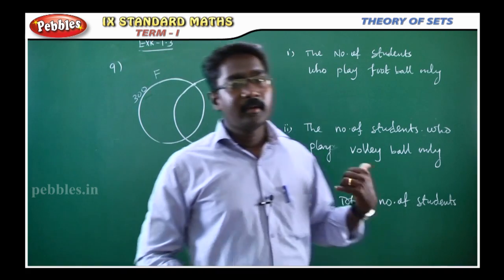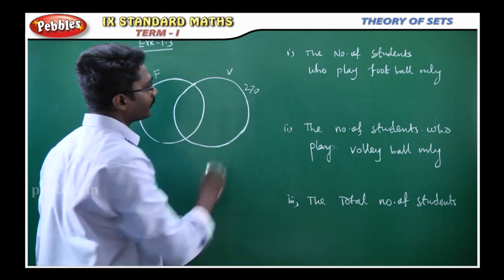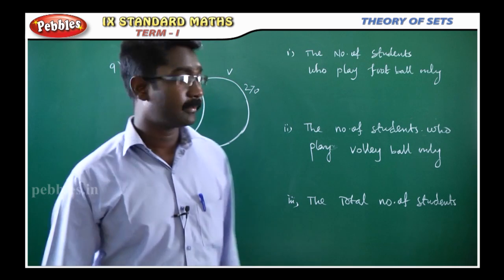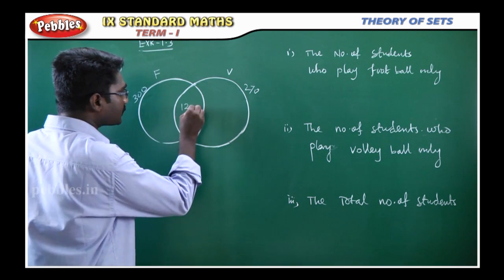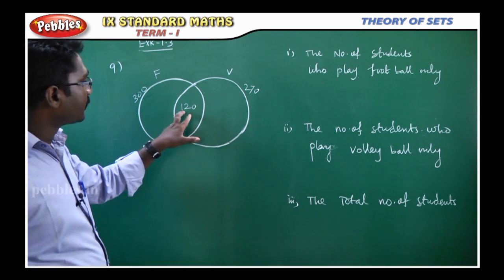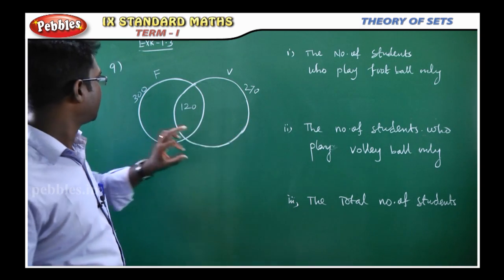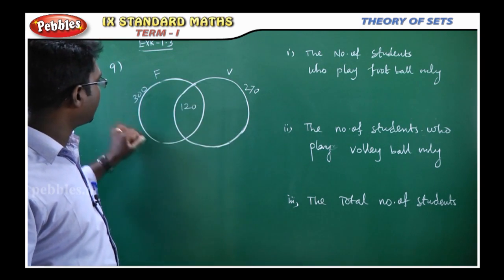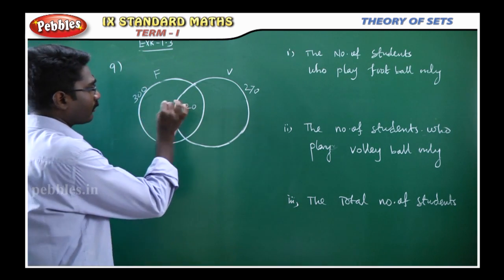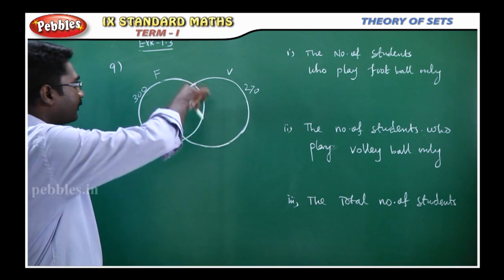If you want to go to the most volleyball available, there are 270 students. This is an important part. 120 students play both the games, so both the games have been in this common part. 120 students have been put through. The volleyball has 270 students, football has 300 students.